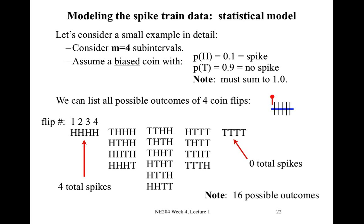We can count up the number of possible outcomes. There is one outcome with four total spikes, four outcomes with three spikes, six outcomes with two spikes, four outcomes with one spike, and one outcome with no spikes. Adding all of these up, there are sixteen possible outcomes total. We can list all of these outcomes because the number of sub-intervals is small — we're only considering four sub-intervals. We'll look at more as we go along.